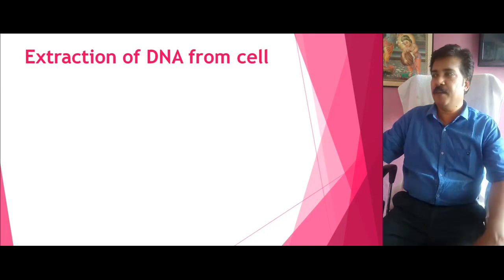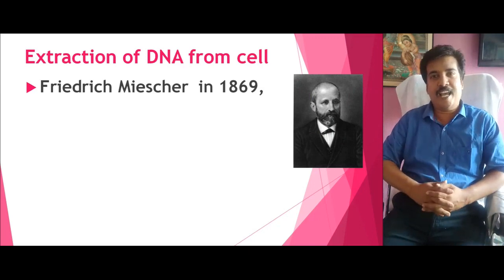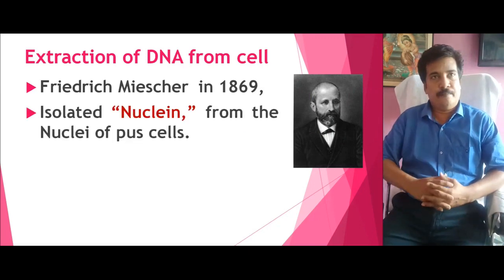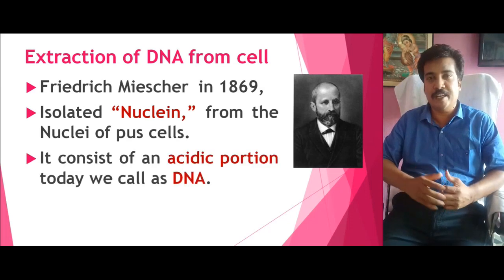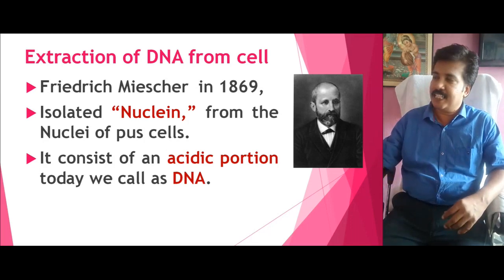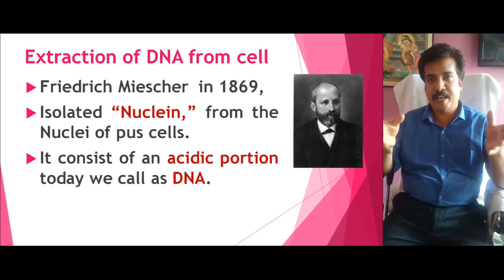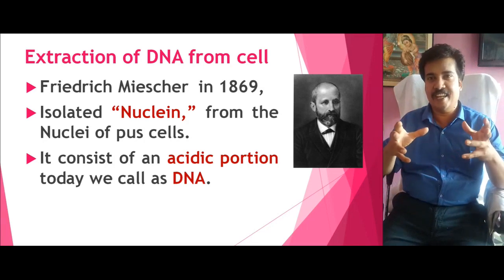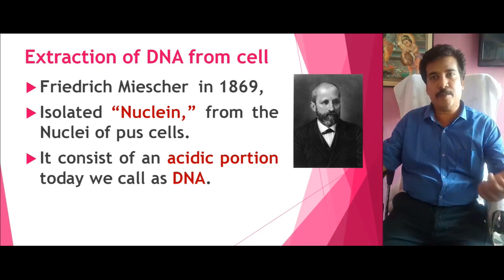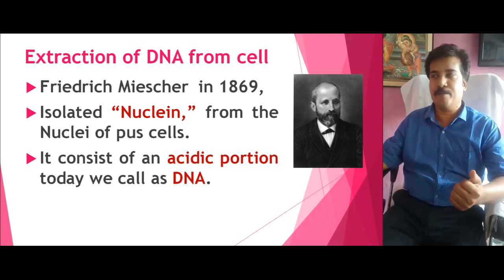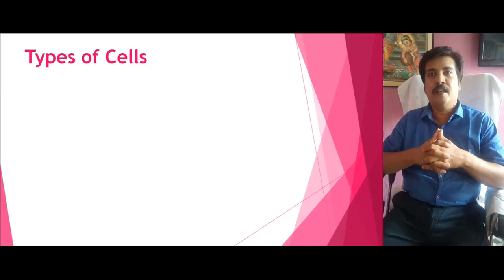What is the extraction of DNA from a cell, and when did it happen for the first time? In 1869, Frederick Miescher isolated material from the nucleus of pus cells. He named it Nuclein. In it he got two materials: one is an acidic portion and another is a basic portion. The acidic portion is what we today call DNA, and the basic portion was found to be a protein — the associated protein of DNA — that was the histones.